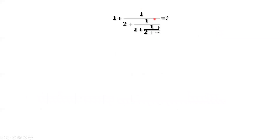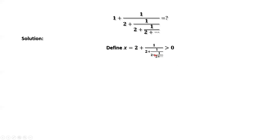How to find the value of this continued fraction? In general, we define an x variable. x equals 2 plus 1 over 2 plus 1 over 2 plus forever, following this pattern. Certainly, we can see that x is bigger than 0. What's the difference between x and this expression? Here is 2, here is 1. This expression is x minus 1.